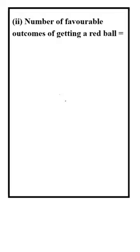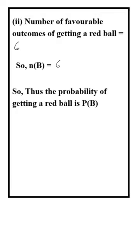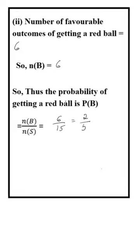Number of favourable outcomes of getting a red ball is 6, so number of elements in event B is 6. Thus probability P(B) is equal to 6 by 15, that is 2 by 5.